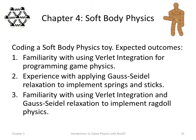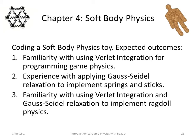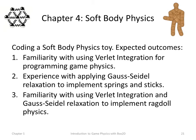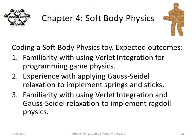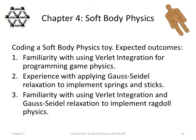Chapter 4 is on soft body physics, showing how to code a soft body physics toy from scratch — no physics engines. Expected outcomes: you'll be familiar with using Verlet integration for programming game physics. Chapter 3 used the old-fashioned Euler integration. You'll have experience applying Gauss-Seidel relaxation to implement springs and sticks — the animated GIF has springs, and the dancing robot is made up of interconnected sticks. Outcome three: you'll know how to use Verlet integration and Gauss-Seidel relaxation to implement ragdoll physics.